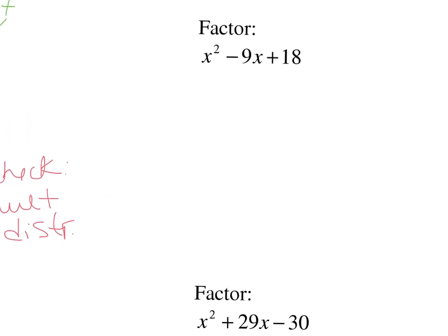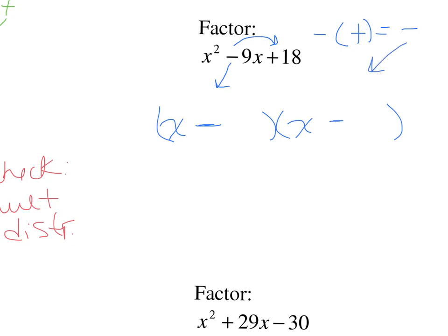Next: x squared minus 9x plus 18. x squared is x times x. Bring the first sign down — that's a negative. Multiply the two signs: negative times positive equals negative. Same signs mean adding in the middle. Factors of 18 that add to make 9: it could be 1 times 18, 2 times 9, or 3 times 6. Only 3 and 6 add to give 9. Writing the biggest one first, we get x minus 6 times x minus 3. Pause and check your work with the distributive property.